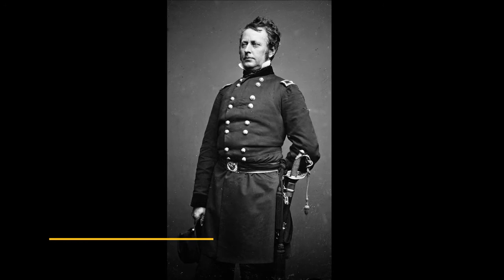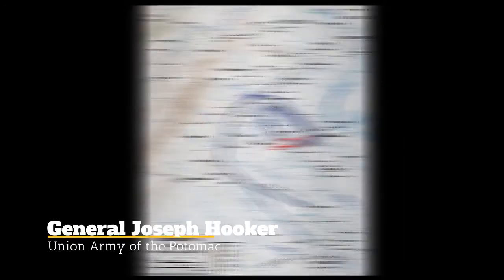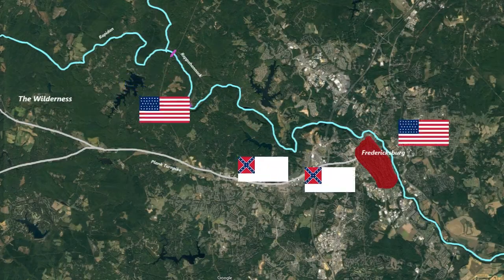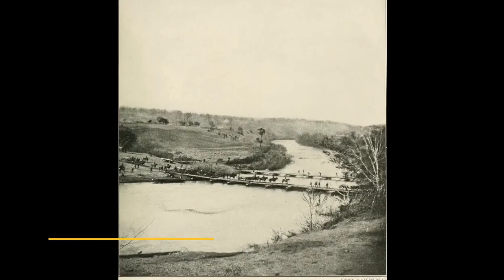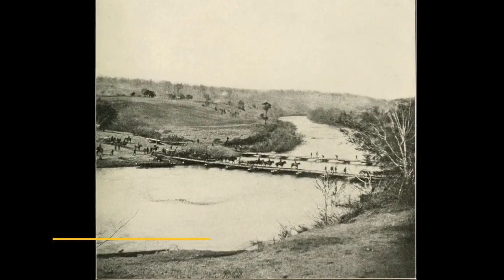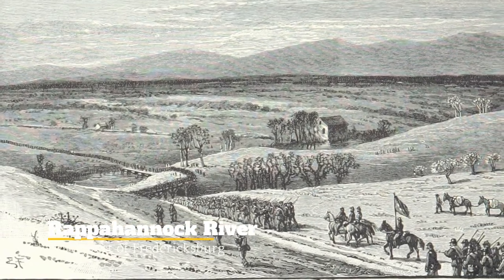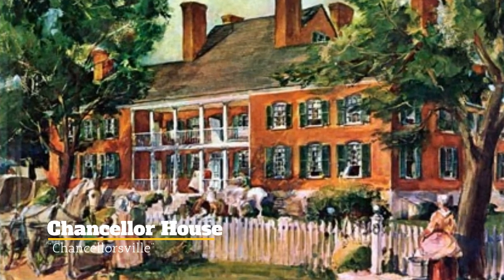Hooker was going to try to move around to outflank Lee himself — he had the men to do it. Lee had to protect Fredericksburg, but Hooker would go around him. Lee was going to send part of his troops to attack on that side. So while Hooker is moving over the Rappidan and Rappahannock Rivers, Lee was going to divide his smaller army to attack both sides. Union headquarters was at the Chancellor House.